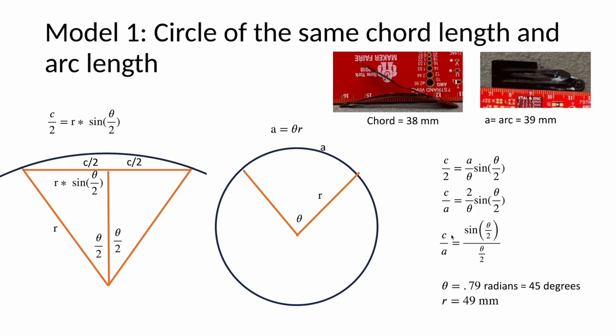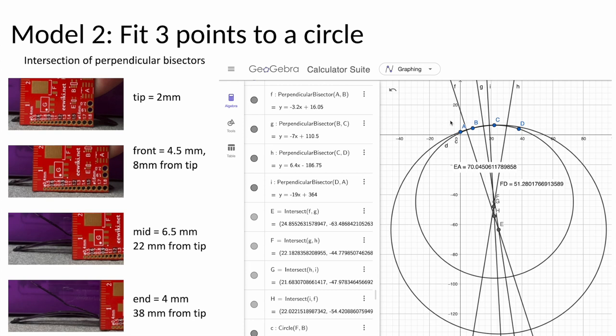The second model I did was to fit three points into the circle. To do this, I took the measurements and plotted them in GeoGebra. So the tip here is point A, it's 2 millimeters up and 0 millimeters over. The B point here is the front point, it is 4.5 millimeters up and 8 millimeters over. The mid one is point C, and the end is point D. Between any three points, you can figure out the circle that goes between them. The trick is to use the perpendicular bisector. Perpendicular bisector contains all the points that are equidistant from two points. So if we do that for A and B, then you've got line F. If you do that for B and C, you've got line G. That means that all the points that lie on line F are equidistant to A and B. All the points that lie on line G are equidistant to point B and C. So you put them together, and their intersection point, which I happen to know is E, that point is equidistant to A and B because it lies on line F, and it's also equidistant to points B and C because it lies on line G, which means that A, B, and C are all equidistant from point E, which means that is the center of a circle. Whatever the radius is, that circle will go through points A, B, and C.